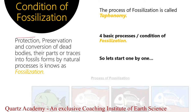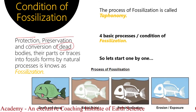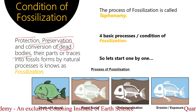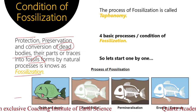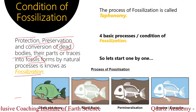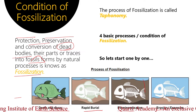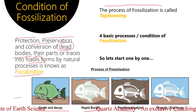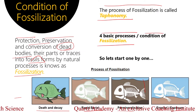Protection, preservation, and conversion of dead bodies and their parts or traces into fossil, formed by the natural process, is known as fossilization. Here we see: death and decay, followed by rapid burial, then permineralization, and lastly the overlying surface is eroded and the fossil is exposed on the surface of the earth. The process of fossilization is simply called as Taphonomy. We have four basic conditions of fossilization.